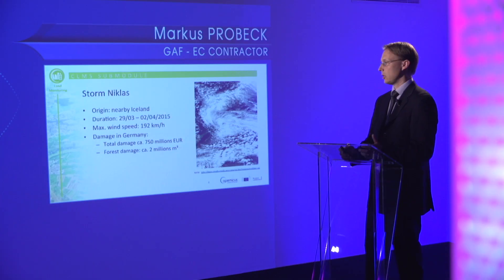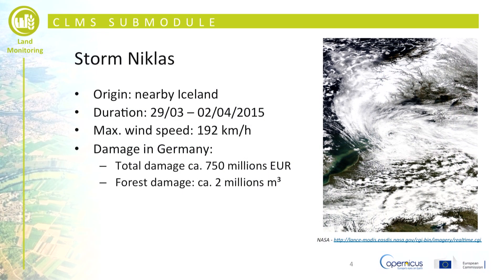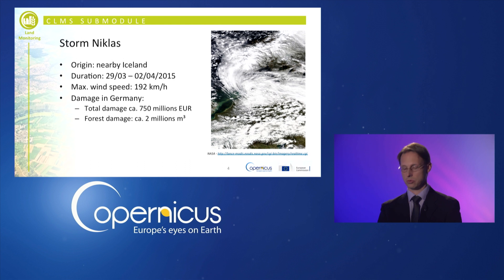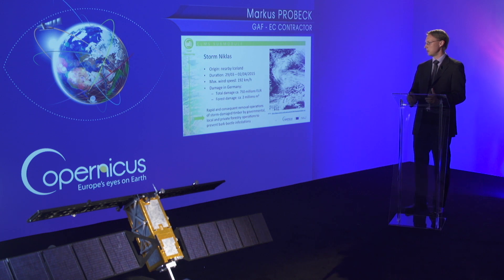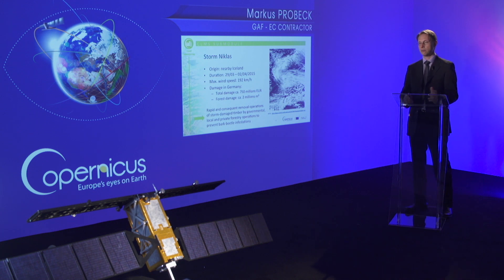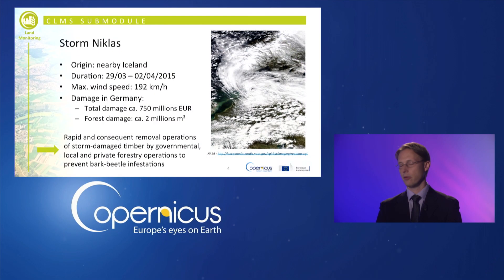That storm originated near Iceland, lasted for several days with wind speed maxima of about 190 kilometers per hour, and caused a forest damage of about 2 million cubic meters. Estimated damages relate to about 750 million euros. It was crucial to have rapid information on where the damages occurred to remove the timber, prevent further infestations by bark beetle, and prevent further losses.